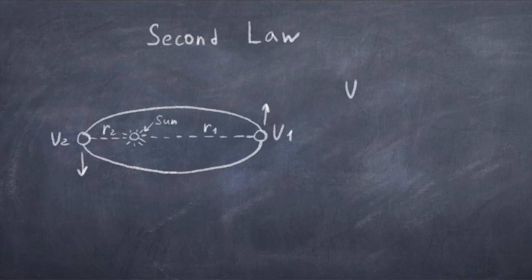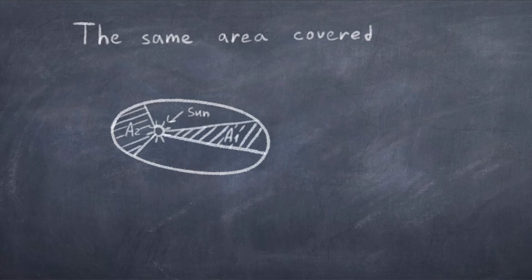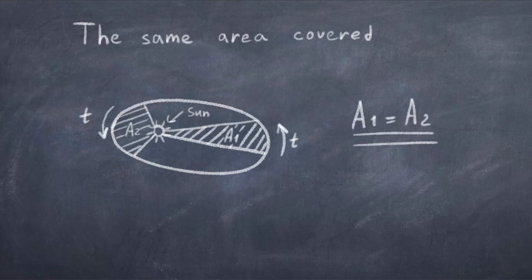Likewise, when the radius is small, which is when the object is close to the object it's orbiting, then the object moves faster. Because of this relation between the radius and the velocity, if you consider a slice of the orbit covered during some time t when r is small, and a slice of the orbit covered during the same time t but when r is big, then the area covered is the same. And this is the essence of Kepler's second law.